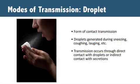Droplet spread diseases, like flu, are spread through infected droplets that are generated when a person coughs, sneezes, laughs, or talks. The infected droplets can either have direct contact with another person, like coughing in someone's face, or through indirect contact when the droplets settle on a surface that is touched or contacted by another person. Droplets generally travel less than six feet and do not stay in the air for very long because they are heavy.